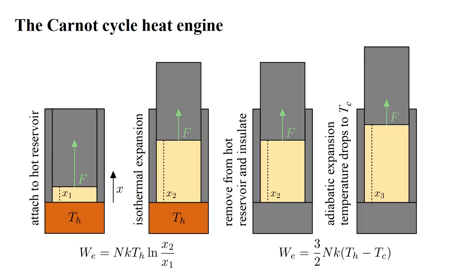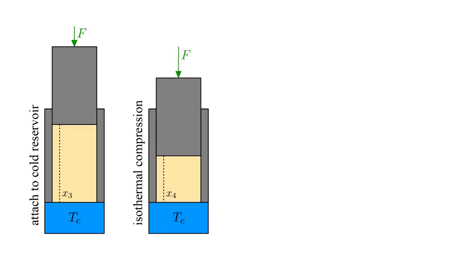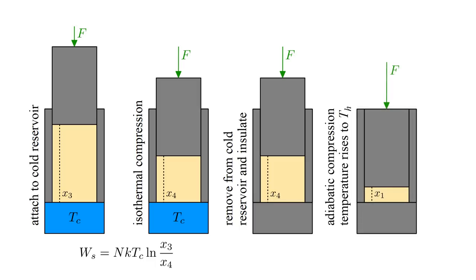This produces additional work: three-halves NK times (T-hot minus T-cold). Now we attach the cold reservoir. Since the gas is already cooled to this temperature, there is no heat transfer. The gas is isothermally compressed from piston position X-3 to X-4, requiring work NK·T-cold·log(X-3 over X-4) to be done on the system, with an equal amount of heat transferred to the cold reservoir. The gas is then insulated again and adiabatically compressed back to the initial piston position X-1, with the gas temperature increasing back to T-hot, increasing internal energy by three-halves NK(T-hot minus T-cold), which equals the work done on the system.